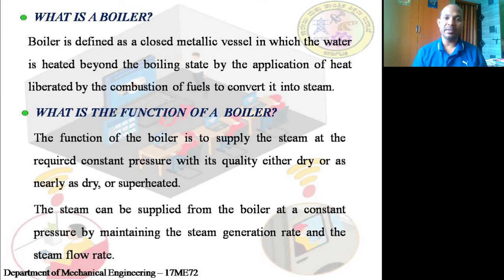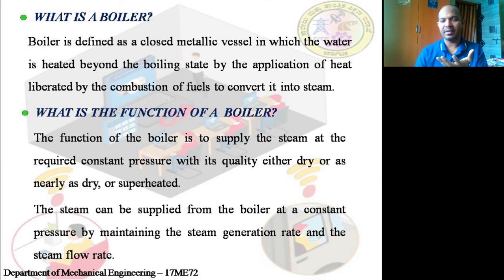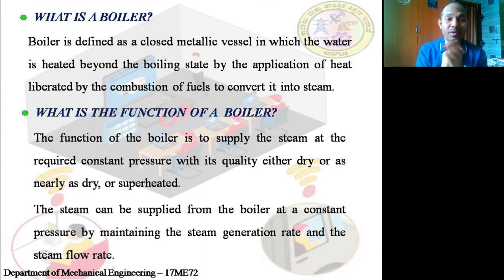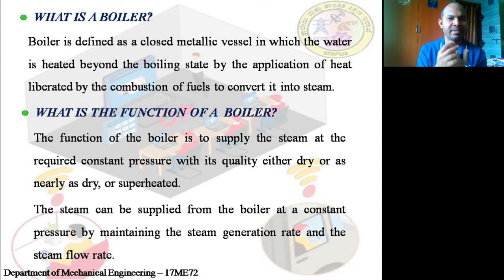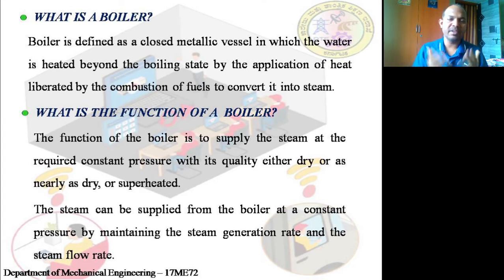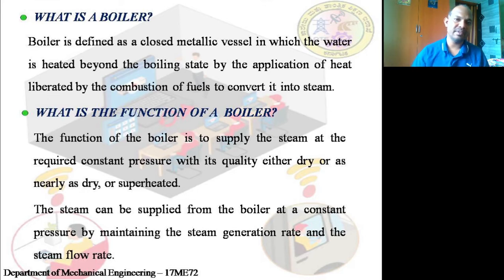The second reason for a closed boiler vessel is containment. When water is converted into vapor in an open container the steam escapes. To prevent this, we use a closed container — like a pressure cooker — where no opening is allowed for steam to escape. As a result, pressure keeps building up. Once it reaches the required pressure, we draw out the steam. That is the logic behind the boiler.